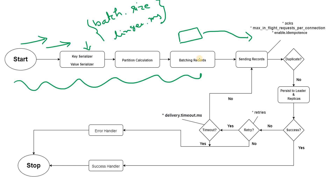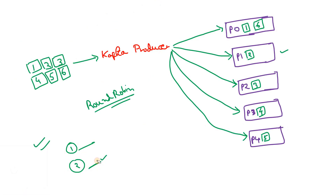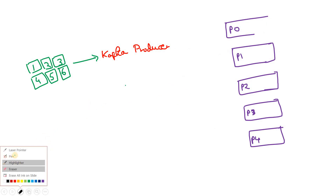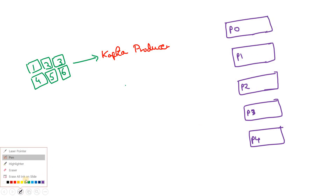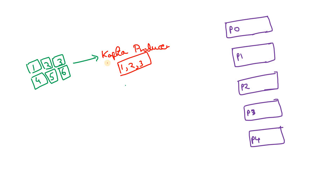When the key is null, to optimize message distribution and reduce broker burden, all messages within a particular batch can be published to one single partition. Let me erase the previous diagram and show this approach. We again have input messages 1, 2, 3, 4, 5, 6, the Kafka producer, and partitions 0 to 4 — five partitions total.